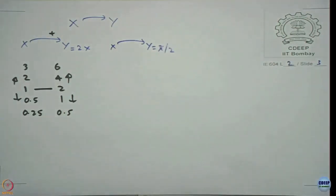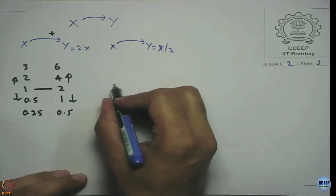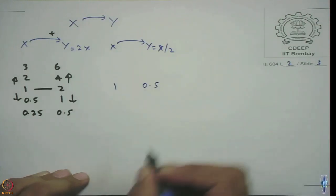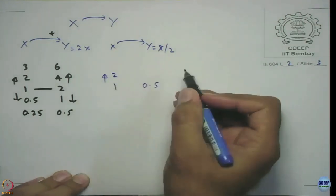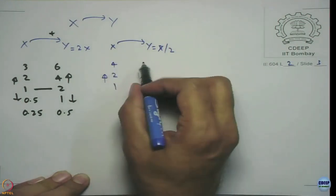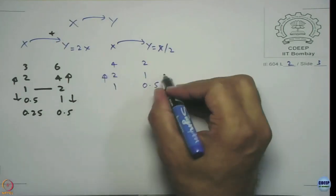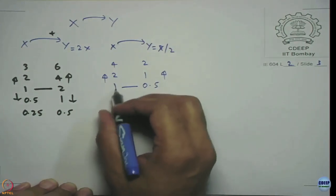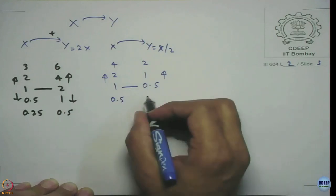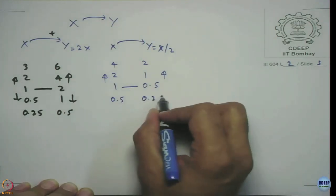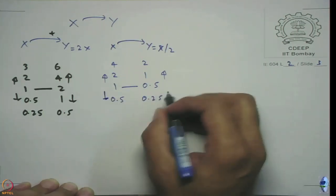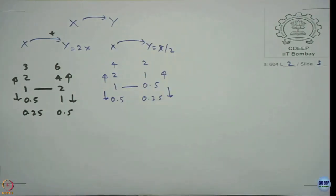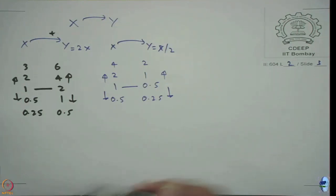Now take Y = X/2. When X = 1, Y = 0.5. As X increases to 2, Y becomes 1; as X increases to 4, Y becomes 2 — it continues to increase. As X falls to 0.5, Y becomes 0.25 — it continues to fall. Whether multiplying by 2 or by 0.5, the direction of movement is the same, so you still represent this link with a plus sign. X influences Y in a positive direction.